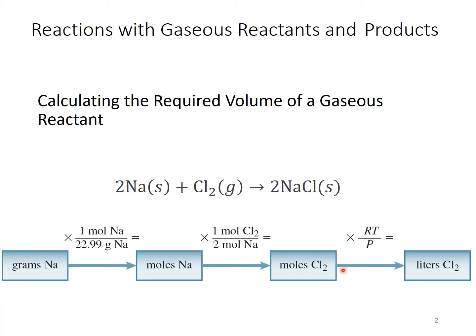So PV equals NRT can be used at this point when you have moles of gas to get to something like liters of Cl₂. You would need to know other factors like the temperature and pressure, for example, or you could do this direct conversion with 22.4 liters if you were at STP, at standard temperature and pressure.